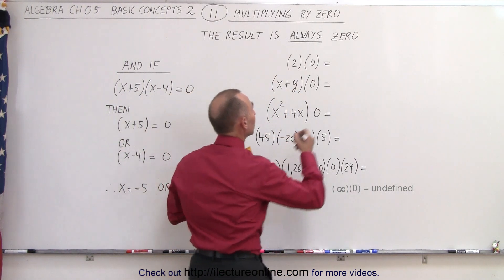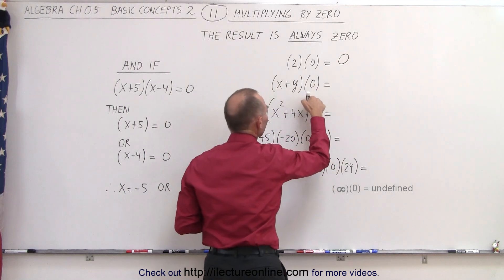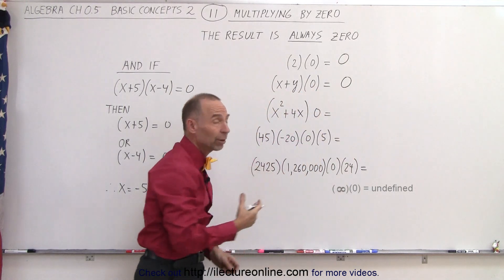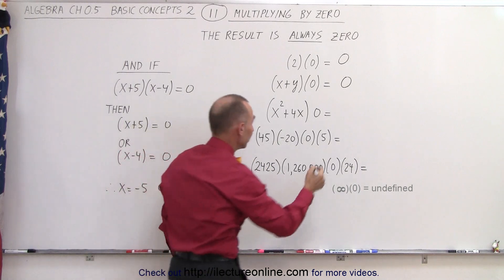So two times zero, well that's equal to zero. X plus y times zero, well that's equal to zero. How about x squared plus 4x times zero? That is equal to zero.